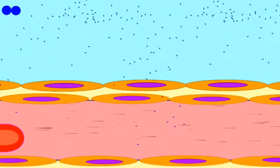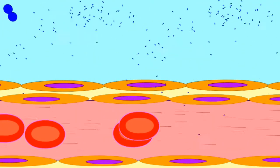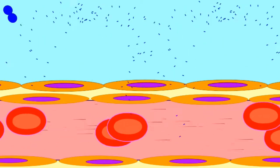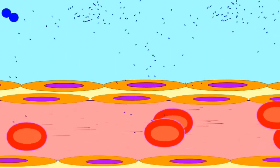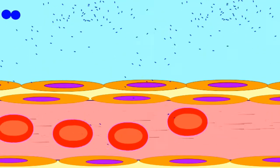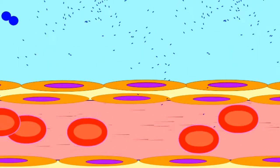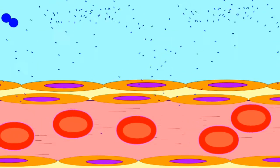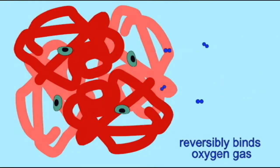The lungs are the place where oxygen gas is at its highest concentration. And as it moves from an area of high concentration to low, oxygen goes into red blood cells and binds the hemoglobin so that you can transport oxygen to the tissues of the body that need it.